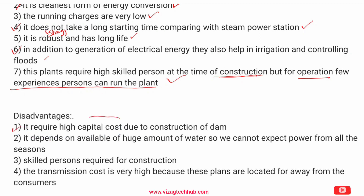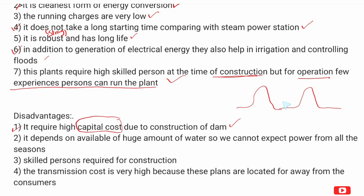Now for the disadvantages. It requires high capital cost and a large initial capital investment. Dam construction is required which is very costly. It also depends on the availability and amount of water — if the water source is insufficient, power generation is affected.